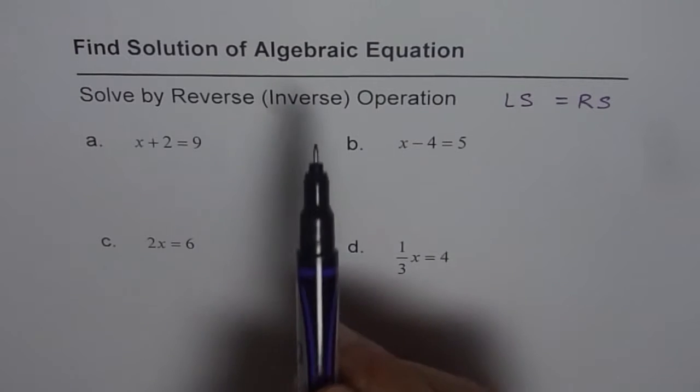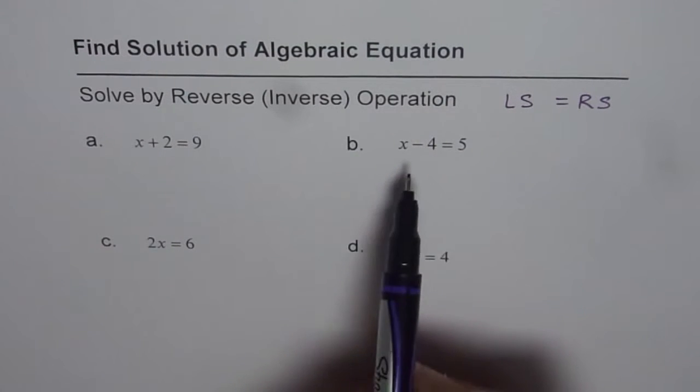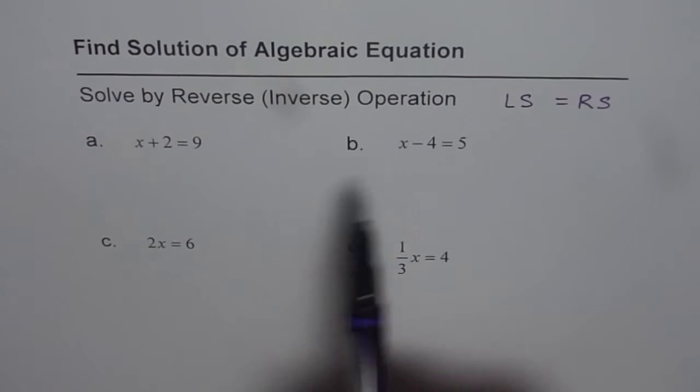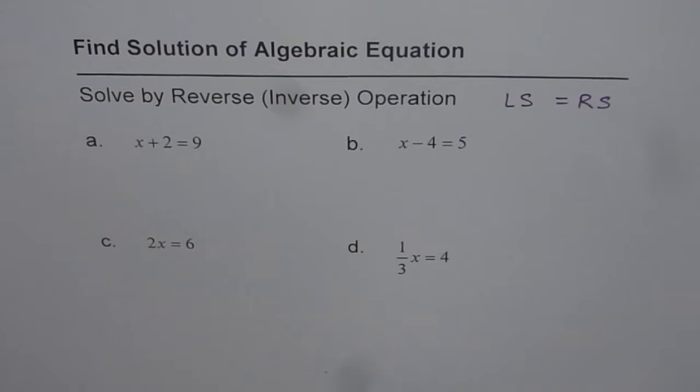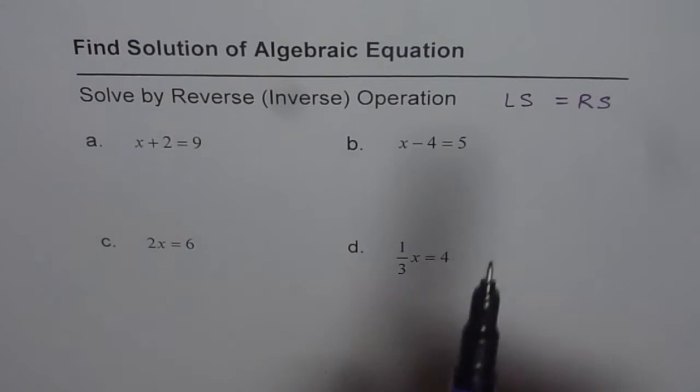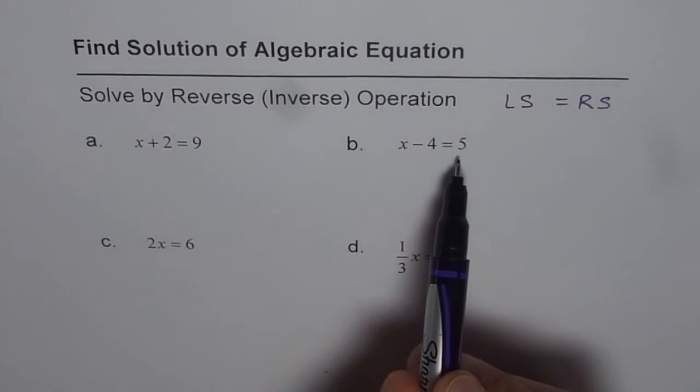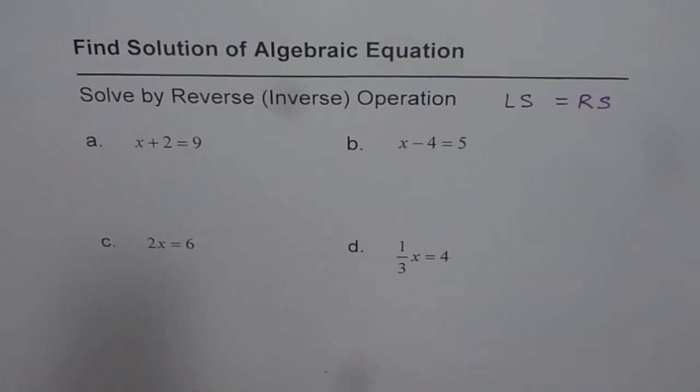As you know, an algebraic equation is one in which we have an equal sign and at least one variable. We have four examples here with x as the variable in each one of them. Solving really means making left side equal to right side. That is the whole idea.